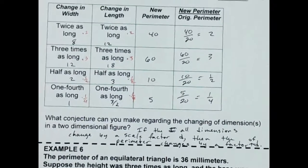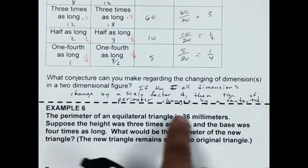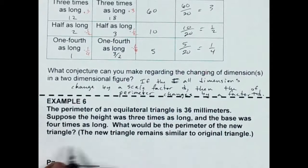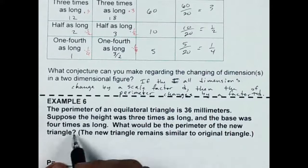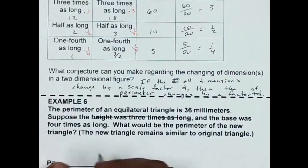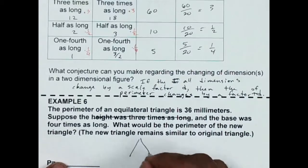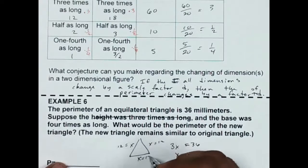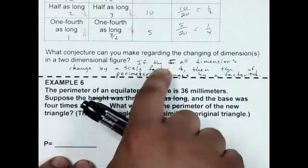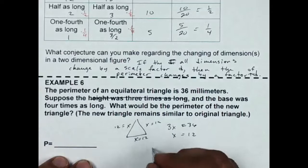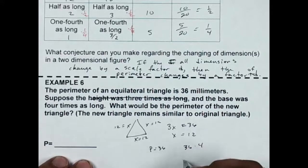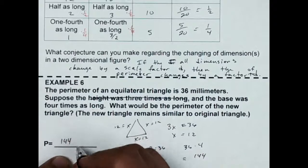So area changes by D squared, while perimeter changes by just D, the first power. Let's look at this: the perimeter of an equilateral triangle is 36 millimeters. Suppose the height was 3 times as long and the base is 4 times as long. What would be the perimeter of the new triangle? I don't really need the height for perimeter. If it's equilateral, letting all sides be X, 3X equals 36 divided by 3, giving X equals 12, so each side is 12. Based on the conjecture, since I'm changing all sides by a factor of 4 to remain equilateral, I take 36 times 4, which comes out to 144. My new perimeter is 144 millimeters.